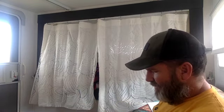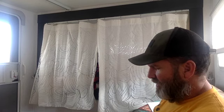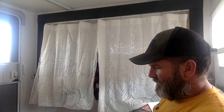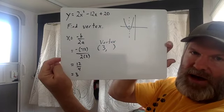Now that we know that, our vertex, like I said earlier, is an ordered pair, an x and a y coordinate. It's 3 comma something. We're almost there. We just need the y now.